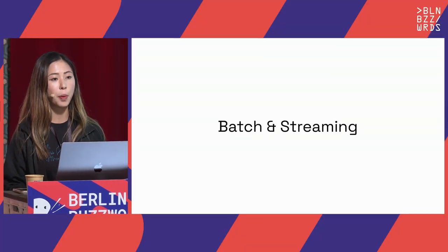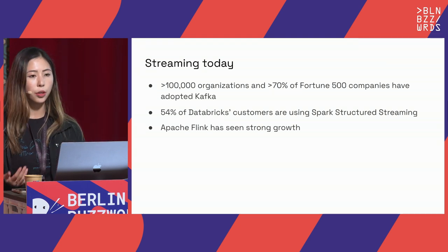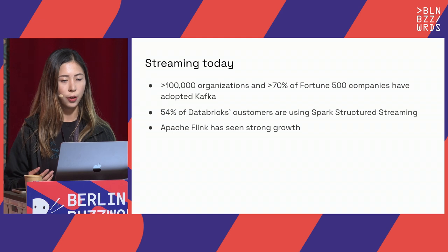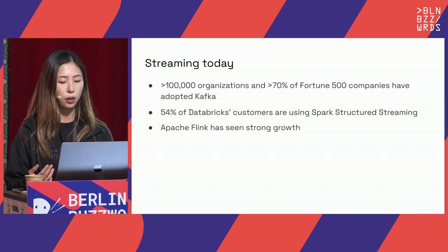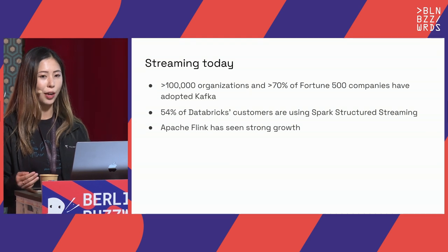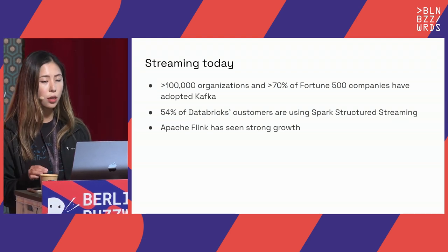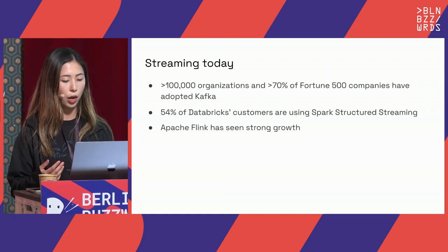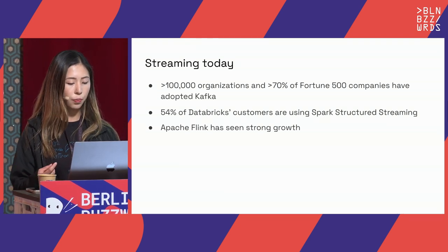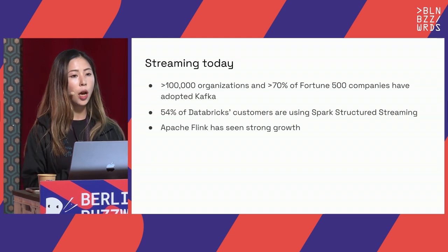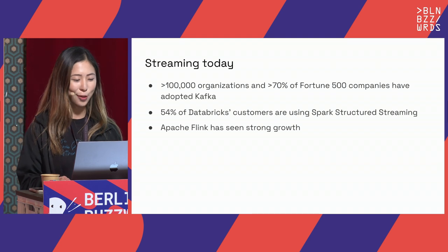The first part of the talk is about batch and streaming — some basic differences and challenges. Streaming is taking off and getting a lot of adoption in recent years. Over 100,000 organizations have adopted Kafka. 54% of Databricks customers are using Spark Structured Streaming, and that stat is a bit out of date — more customers are transitioning to that. Flink, the de facto standard for open-source stream processing, has seen very strong growth in the past five years and is hitting its 10-year open-sourcing anniversary this year.